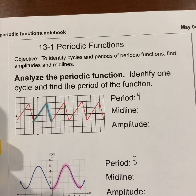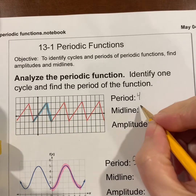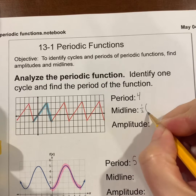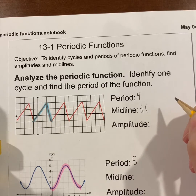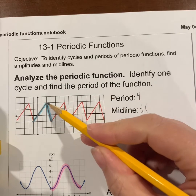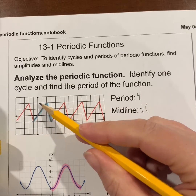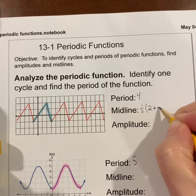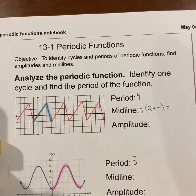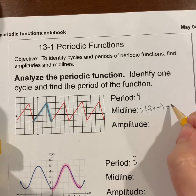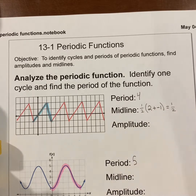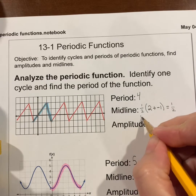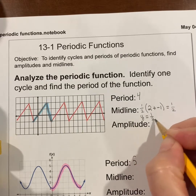The midline is half of the max plus the min. The max y-value here is two, the min is negative one. Two plus negative one is one, and half of one is one half. So the midline — and remember, it's a horizontal line, so we write it as an equation — would be y equals one half.